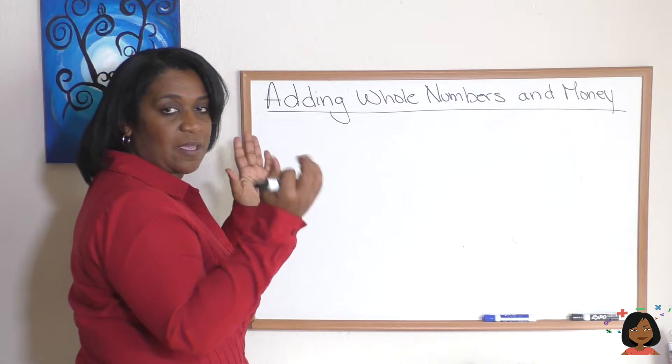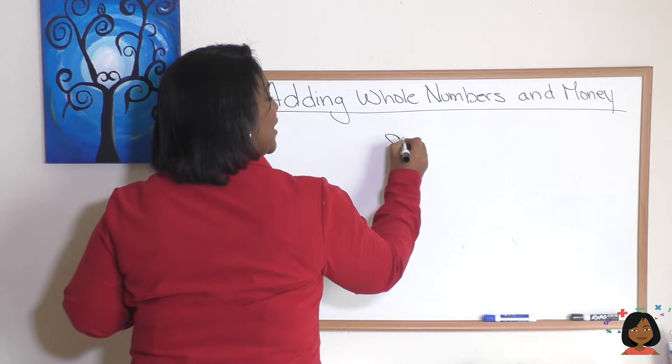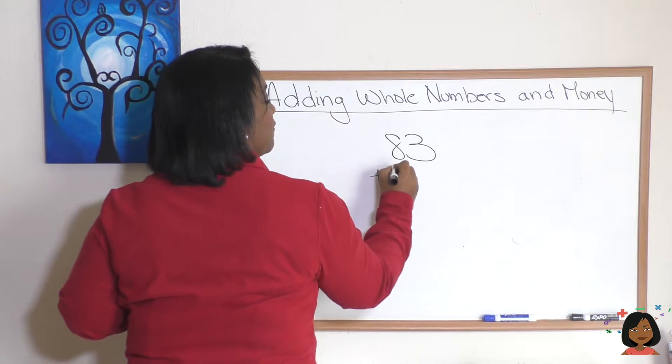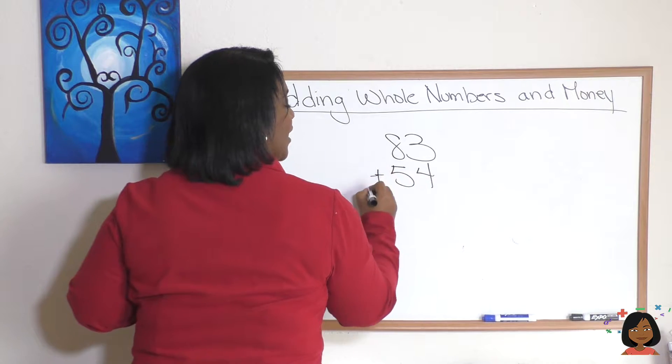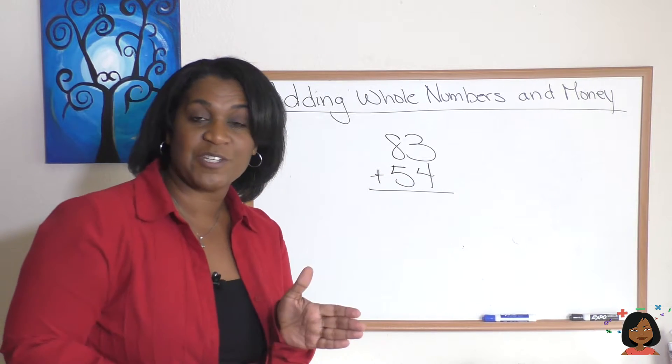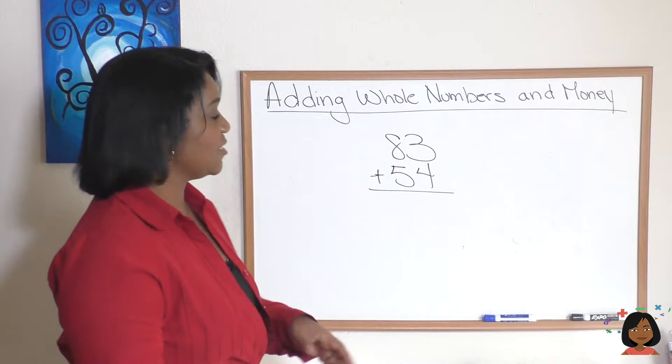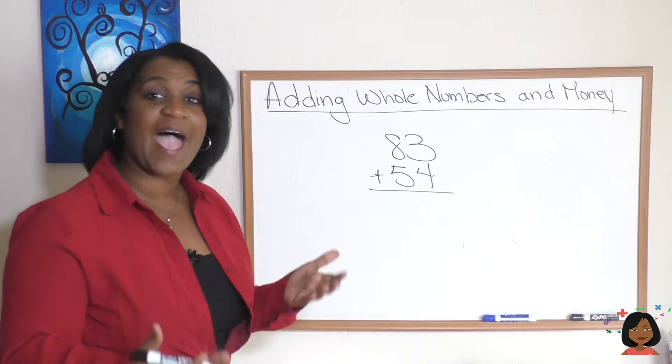Let's get started. I'm going to pick some simple numbers: 83 and 54, and we're going to add these together. But before we do that, let me share some definitions.